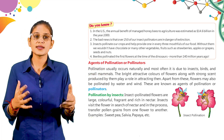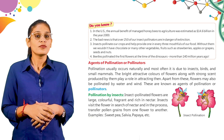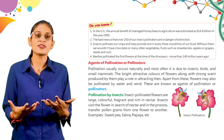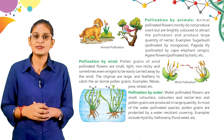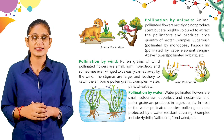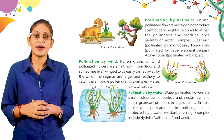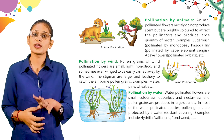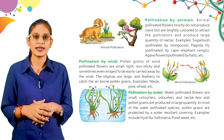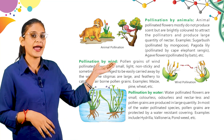In insect pollination, the flowers are big, colorful, and fragrant because they are rich in nectar, which is what attracts insects. Pollination by animals: animal-pollinated flowers mostly do not produce scent but are brightly colored to attract the pollinators and produce a large quantity of nectar. Examples include sugar birds pollinated by mongooses, pagoda lily pollinated by cape elephants, agave flowers pollinated by bats, etc. These flowers produce nectar in large quantities. Look at the picture showing animal pollination.